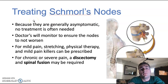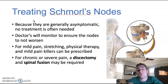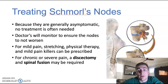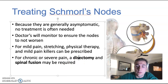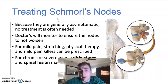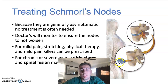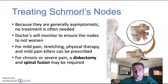Treating Schmorl's nodes — because they're generally asymptomatic, you're generally not going to need treatment. Doctors are still going to want to monitor them though, because just because they're asymptomatic when they first appear doesn't mean they're going to stay that way. It is a herniated disc, and if that nucleus pulposus continues to leak out into the vertebrae, they could become problematic — causing the immune response and inflammation that leads to back pain. If they get severe enough and are threatening to break down the spinal cord, a discectomy may be required with spinal fusion, where the disc is removed and the spine is fused together so that disc is no longer needed.